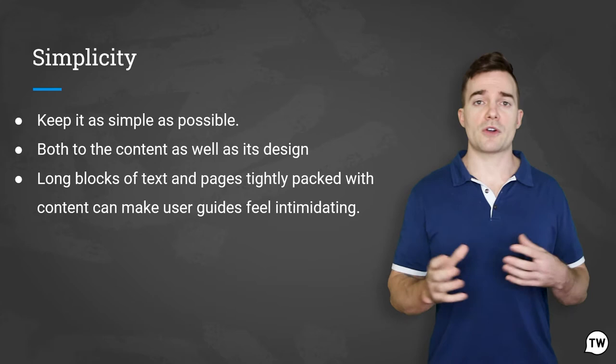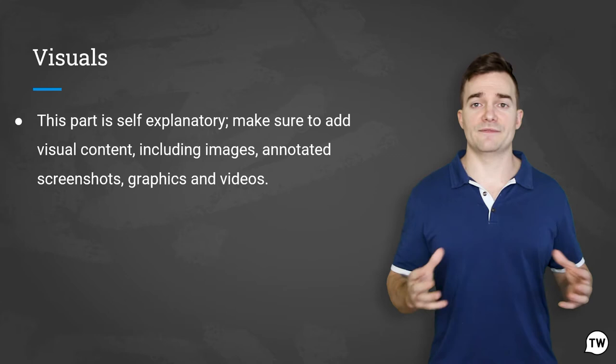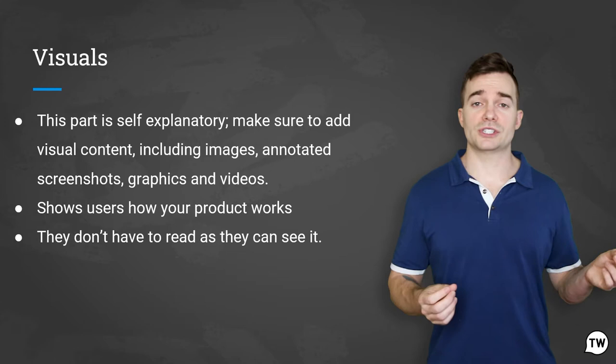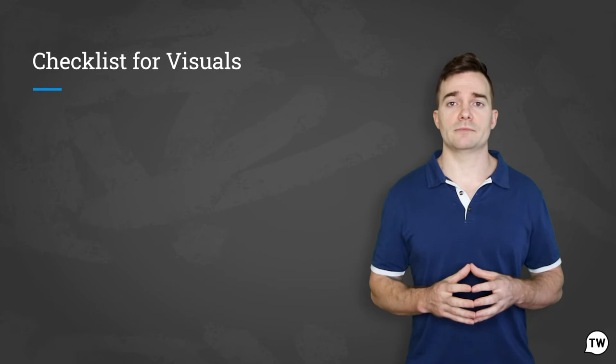One of the helpful things you can do is add visual content, including images, annotated screenshots, graphics, and videos. It shows users how your product works — they don't have to just read it, they can see it. Popular ways of including visual content are screenshots, GIFs, screen recordings, tutorial videos, and many more formats in order to provide these visuals.